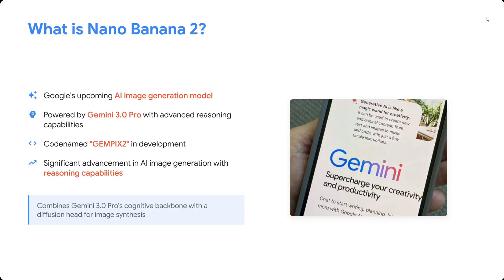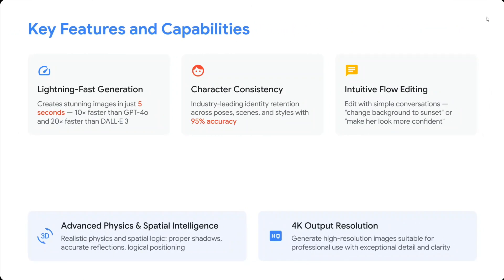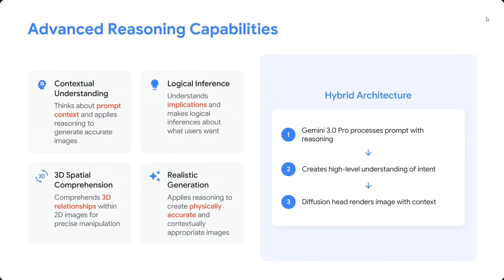These are all assumptions and rumors so far — I've tried gathering all the information across blog posts to understand what the potential updates in Imagen 2 could be. Key features that could come include lightning-fast generation, 10x faster than GPT-4o or 20x faster than DALL·E. Character consistency would be improved, with intuitive flow editing — for example, simple conversational commands like 'change background to sunset.' 4K output resolution and advanced physics and spatial intelligence should also be integrated, along with advanced reasoning capabilities including contextual understanding, logical inference, 3D spatial comprehension, and realistic generation.